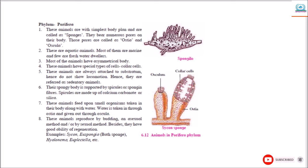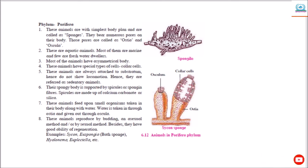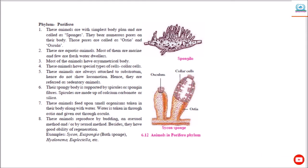These animals have a special type of collar cell. These animals are always attached to a substratum, hence do not show any locomotion. Hence, they are referred to as sedentary animals. Their spongy body is supported by spicules or spongin fibers. Spicules are made up of calcium carbonate or silica. These animals feed upon small organisms taken into their body along with water. Water is taken in through Ostia and expelled out through Oscula.